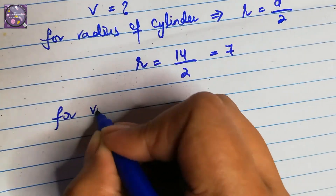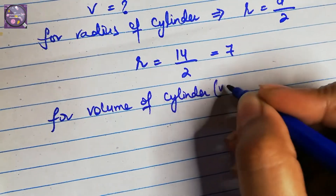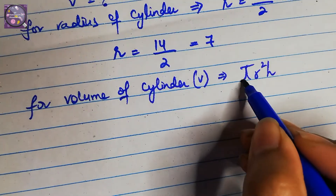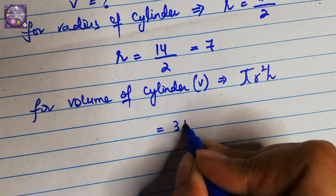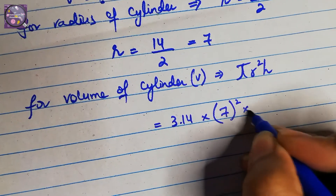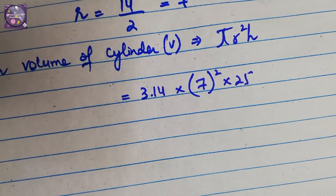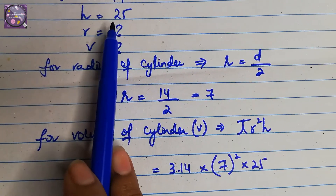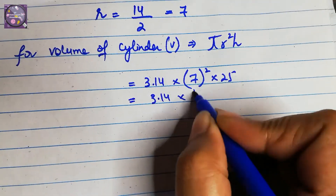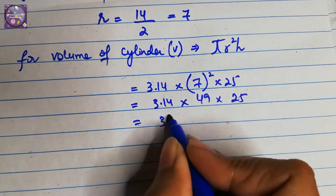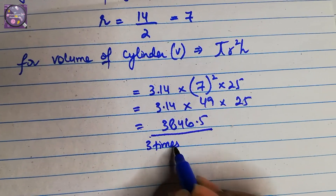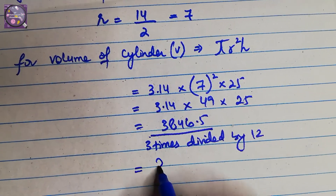For the volume of a cylinder, we have the formula: V = π r² h. We put the constant of pi as 3.14, multiply by r which is 7 squared, and multiply by 25 which is the height. We do the calculations: 3.14 × 49 × 25. The result is 3846.5. We then divide this answer 3 times by 12.